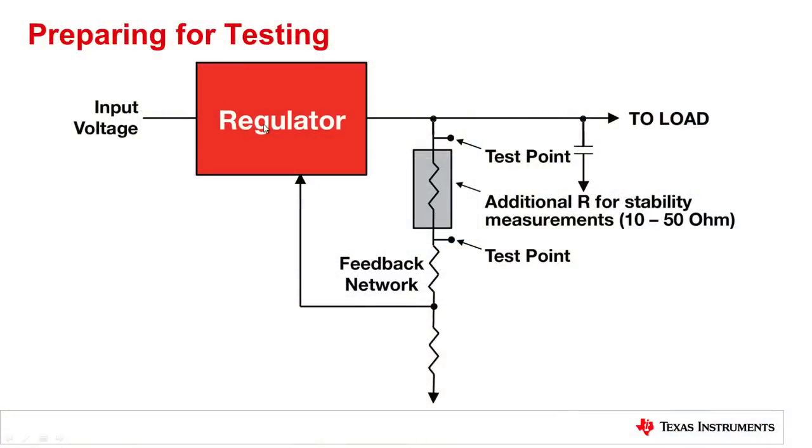So shown here is your typical power supply regulator circuit. It could be a linear or a switch mode power supply. It monitors the output, brings it through, usually it's a voltage divider back into the input which goes into the error amplifier within the regulator. So you want to add an additional resistor above the feedback network in the order of 10 to 50 ohms, and that will provide an injection point for the network analyzer for accurate stability measurement.